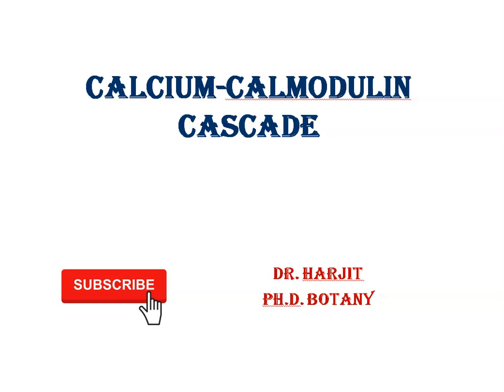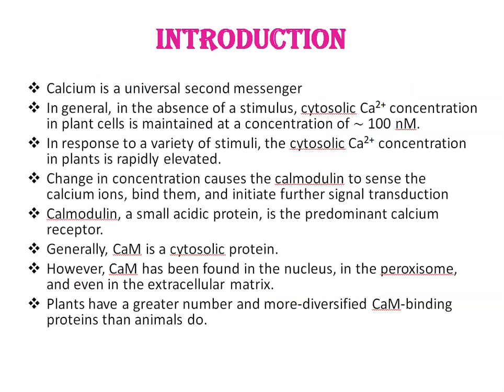Today, we are going to talk about the Calcium-Calmodulin Cascade. Calcium is a universal second messenger that acts as a mediator of stimulus-response coupling in the regulation of diverse cellular functions. In the absence of a stimulus, cytosolic calcium concentration in plant cells is maintained at approximately 100 nM. But in response to a variety of stimuli — including light, gravity, abiotic or biotic stresses, and hormones — this cytosolic calcium concentration is rapidly elevated via increased calcium influx.